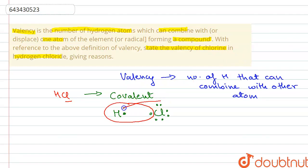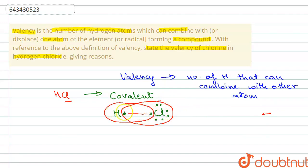These two electrons are being shared and combined to form a single bond between hydrogen and chlorine. Two electrons are going to be shared. As you can see, hydrogen has achieved noble gas configuration while chlorine has also achieved noble gas configuration of eight electrons in its outermost shell.